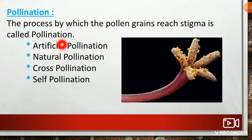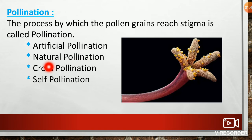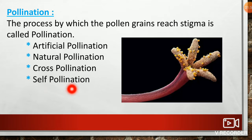What is pollination? The process by which the pollen grains reach the stigma is called pollination. There are four types of pollination: artificial pollination, natural pollination, cross pollination, and self pollination.